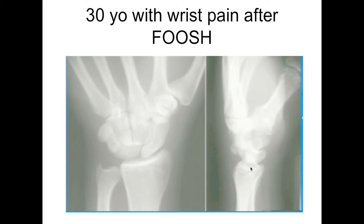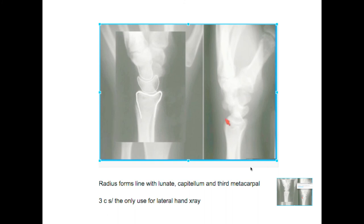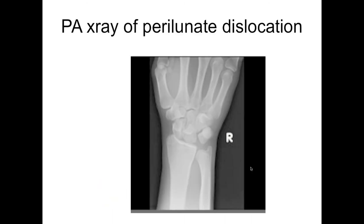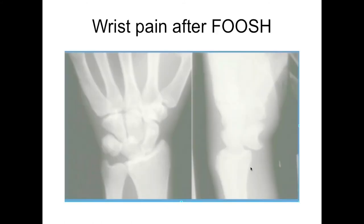Know those C's. Perilunate really is a capitate dislocation — they call it perilunate because everything around the lunate has dislocated. These things are missed, so it's important to have this in your repertoire. On the lateral, it doesn't stack up. You can see the proximal row of carpal bones — scaphoid, lunate, triquetrum — they don't line up with the capitate. They're all overlapping. That is your first sign. You confirm it on the lateral — you should be able to walk through between all these bones, and when they're overlapping, that is abnormal.